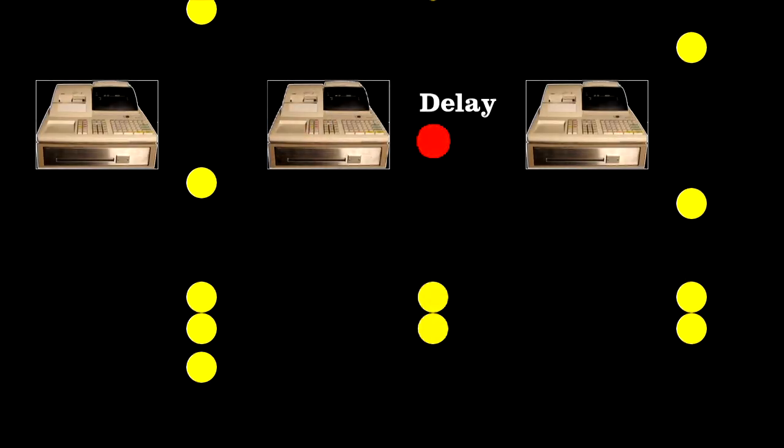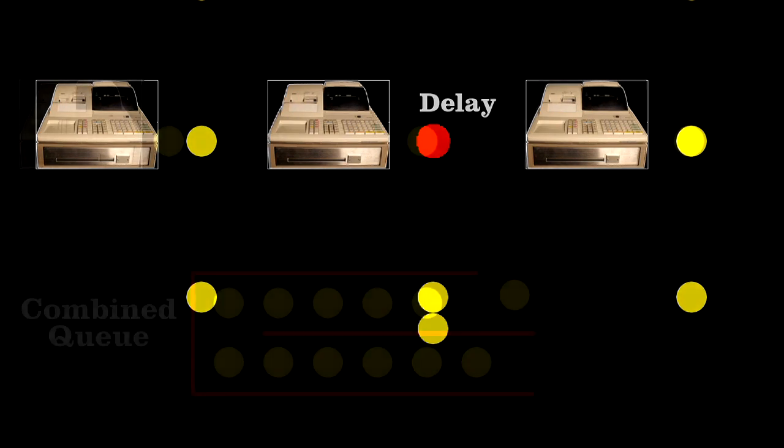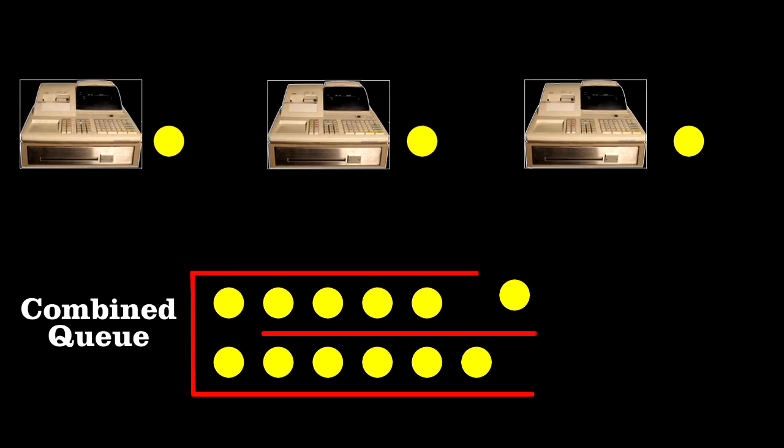In the single line, single cashier setup, any delay, like a price check, stops the line completely. In contrast, when a line feeds to multiple cashiers, it's likely that only one of the three customers in front of you will have a delay, because recall that in Erlang's model, delays and events are distributed randomly, and that means a register will likely be open.